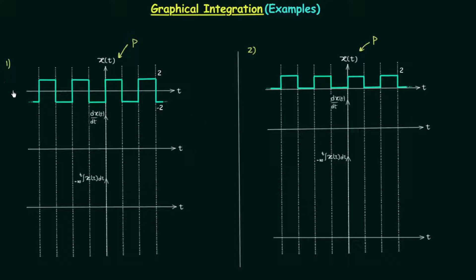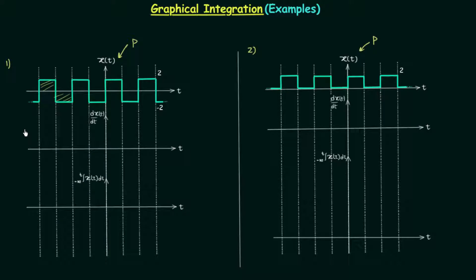Let's start with the first problem. Periodic signals extend from minus infinity to infinity, meaning a particular structure repeats from minus infinity to infinity. In this problem we have taken only a small portion of the signal, and by obtaining the differentiated and integrated waveforms of this portion we will visualize the waveforms from minus infinity to infinity.